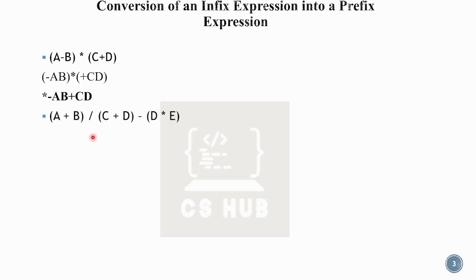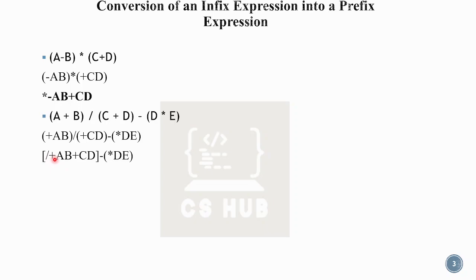This is the infix expression and this is the corresponding prefix expression. Here we have three parentheses. Plus a b, plus c d, star d — giving us: plus a b divided by plus c d minus star d. The evaluation goes left to right with priority order, and the final result is the prefix expression.